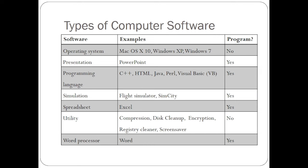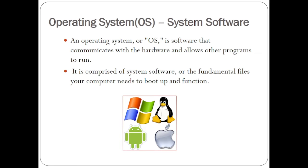Examples of computer softwares in general include programming languages, spreadsheet, utilities, and operating system. Examples of operating systems include Mac OS, Windows XP, Windows 7, and so on. The other name for system software can always be equated to operating system. As you can see, the operating system allows communication between other programs and the hardware.